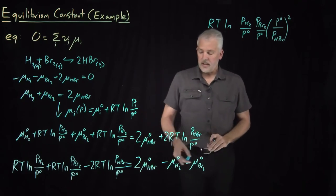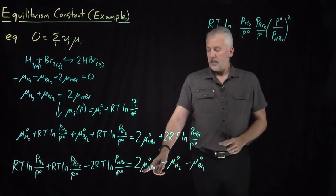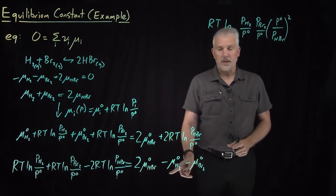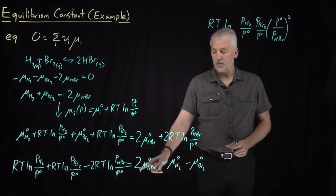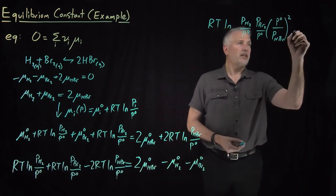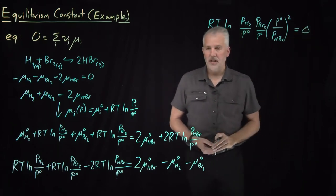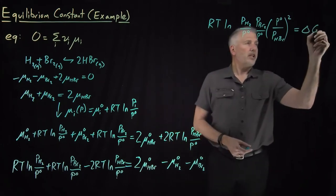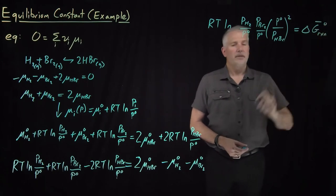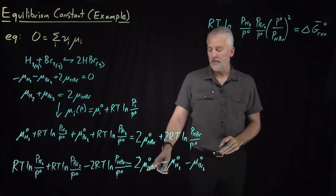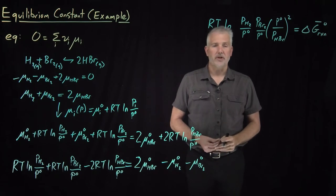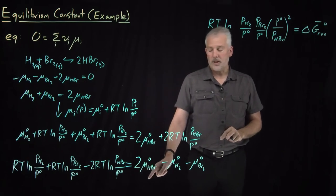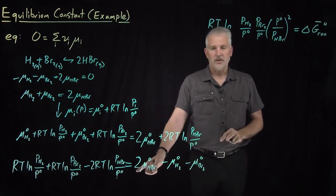On the right side, I've got a difference in chemical potentials — chemical potentials of products minus chemical potentials of reactants, with stoichiometric coefficients. That's the change in chemical potential when the reaction proceeds, which I'll call the change in molar Gibbs free energy, ΔG°, recalling that chemical potential is the partial molar Gibbs free energy.